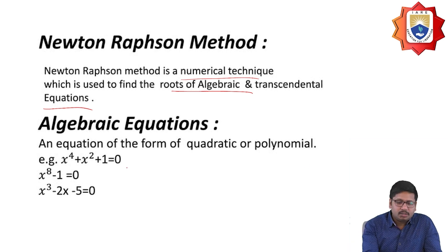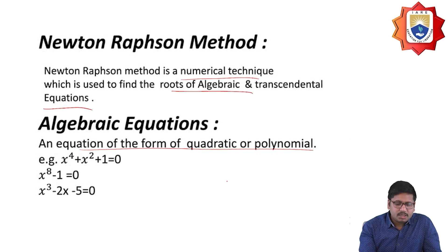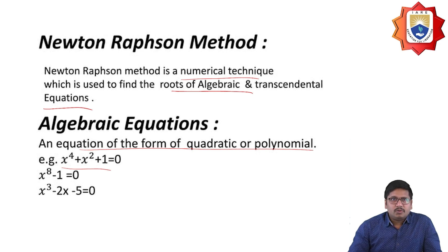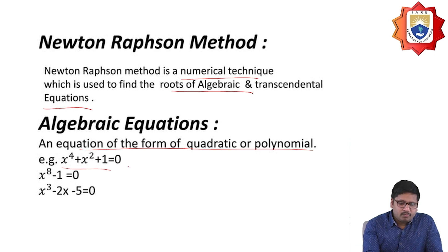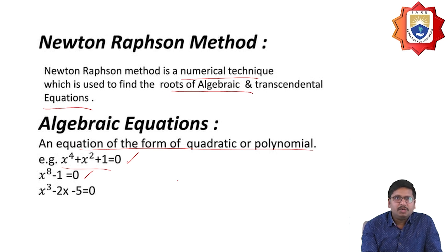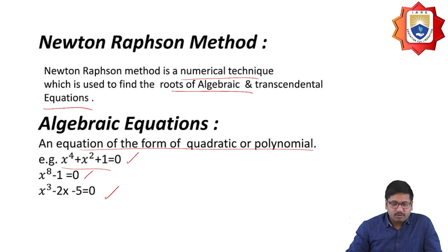Algebraic equations are equations of the form quadratic, numerical, or polynomial. Examples include x to the power 4 plus x squared plus 1 equal to 0, x to the power 8 minus 1 equal to 0, and x cubed minus 2x minus 5 equal to 0. These are various algebraic equation forms.